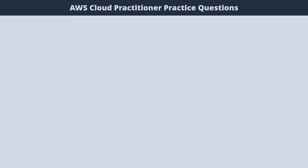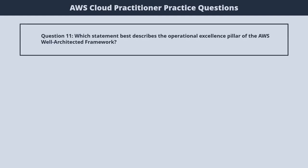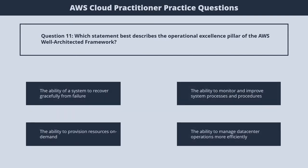Question 11. Which statement best describes the operational excellence pillar of the AWS well-architected framework? 1. The ability of a system to recover gracefully from failure. 2. The ability to monitor and improve system processes and procedures. 3. The ability to provision resources on demand. 4. The ability to manage data center operations more efficiently. The correct answer is 2. The ability to monitor and improve system processes and procedures.